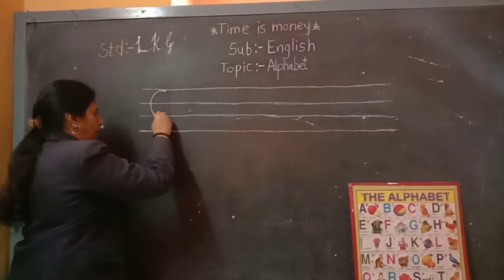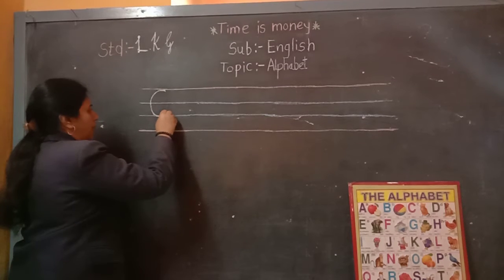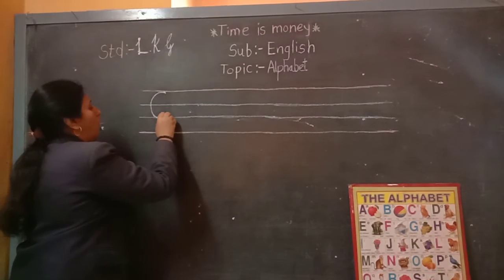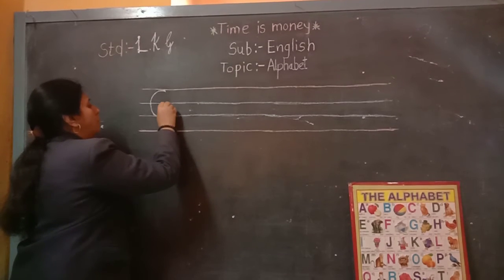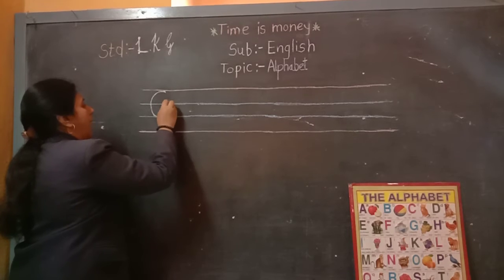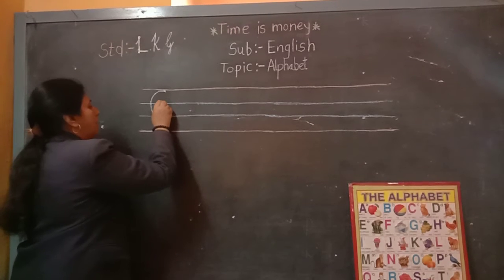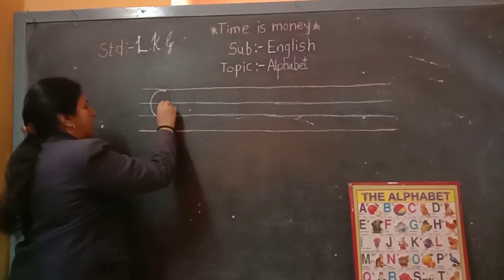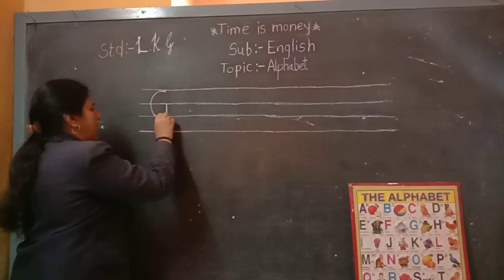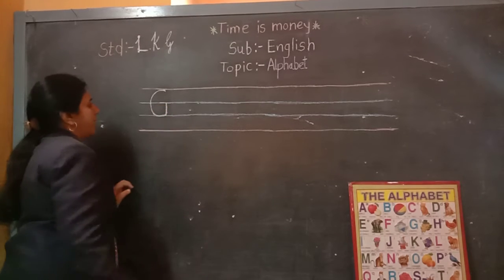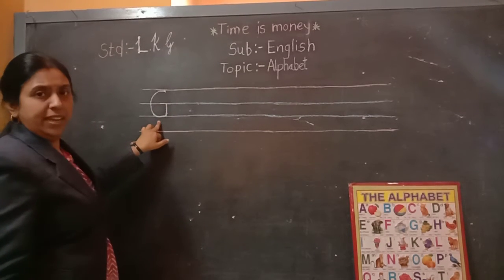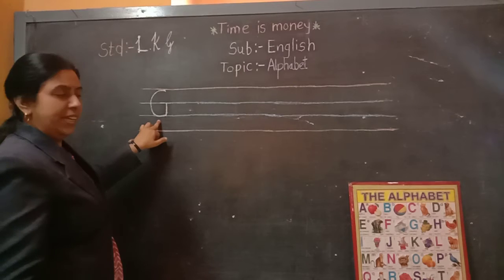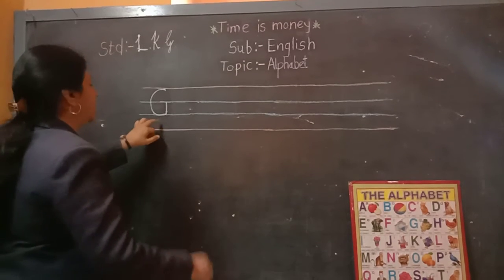You have to start from the red line and end with the second blue line. A big curve, then go up and slip in line on the first blue line. Which letter is this? Capital G! Capital G!